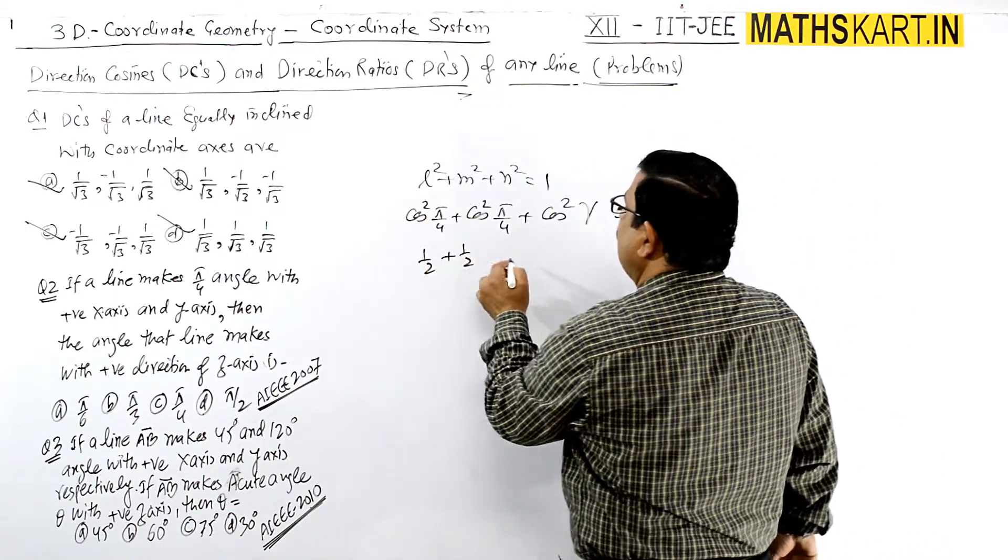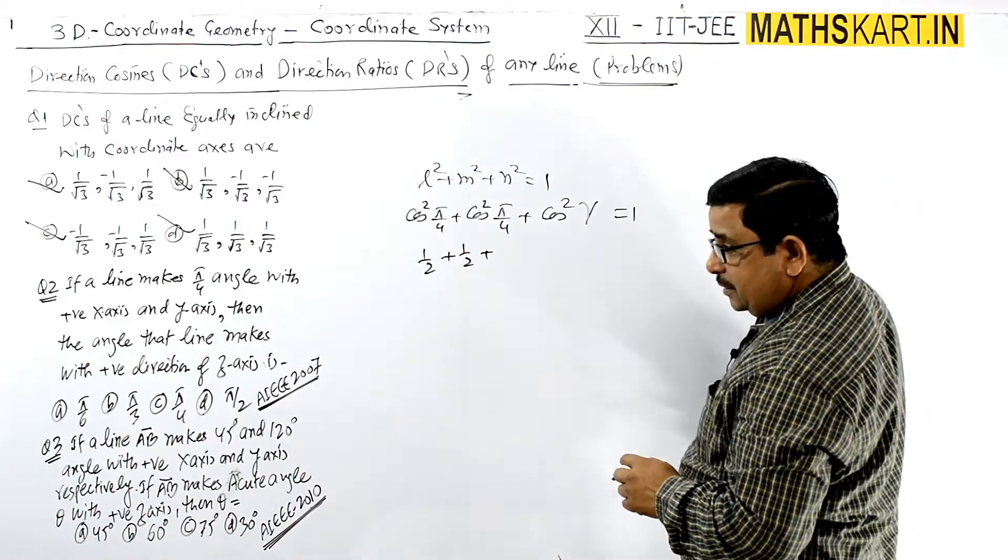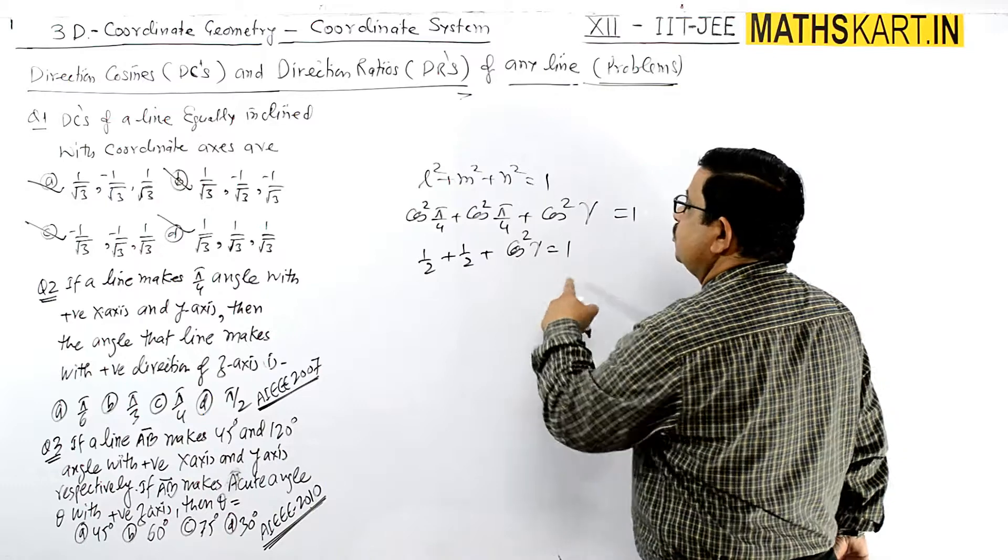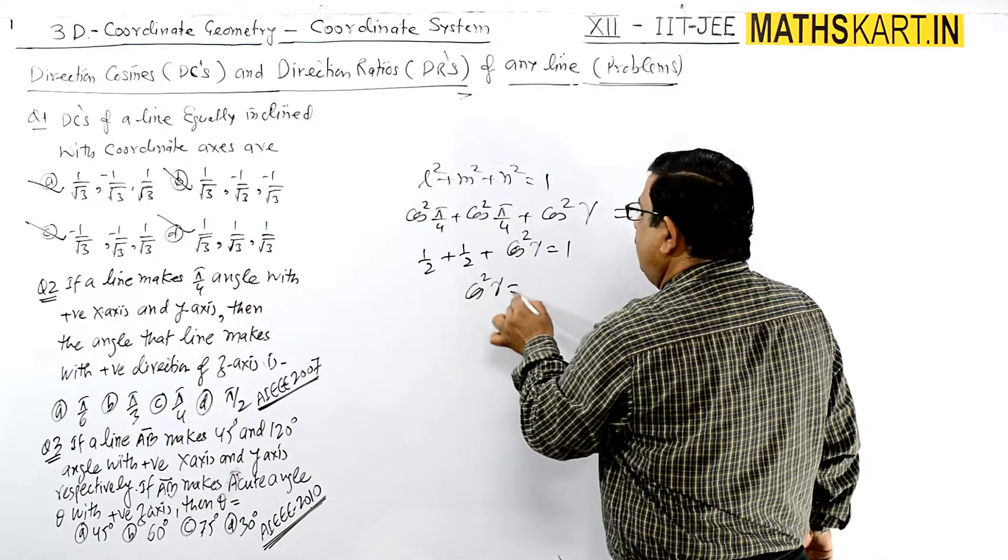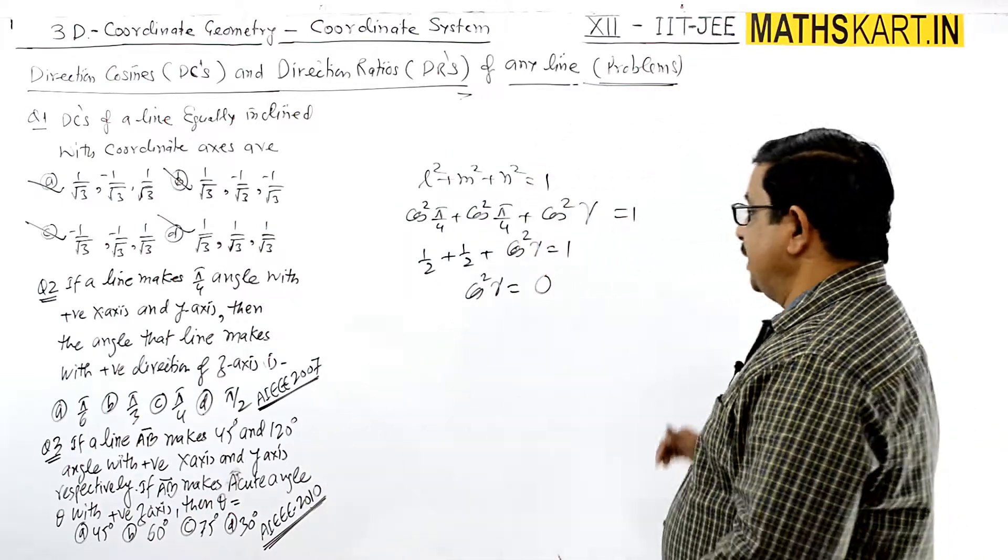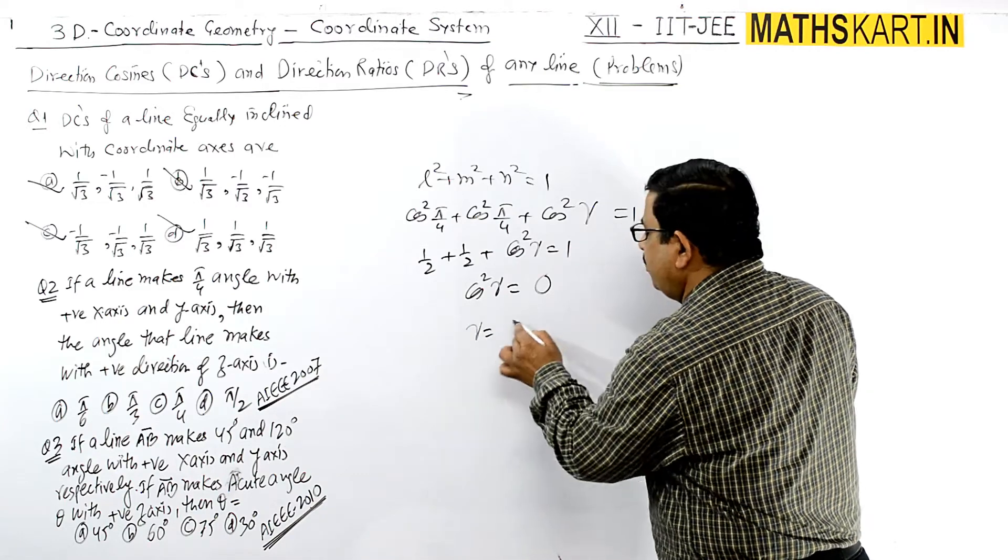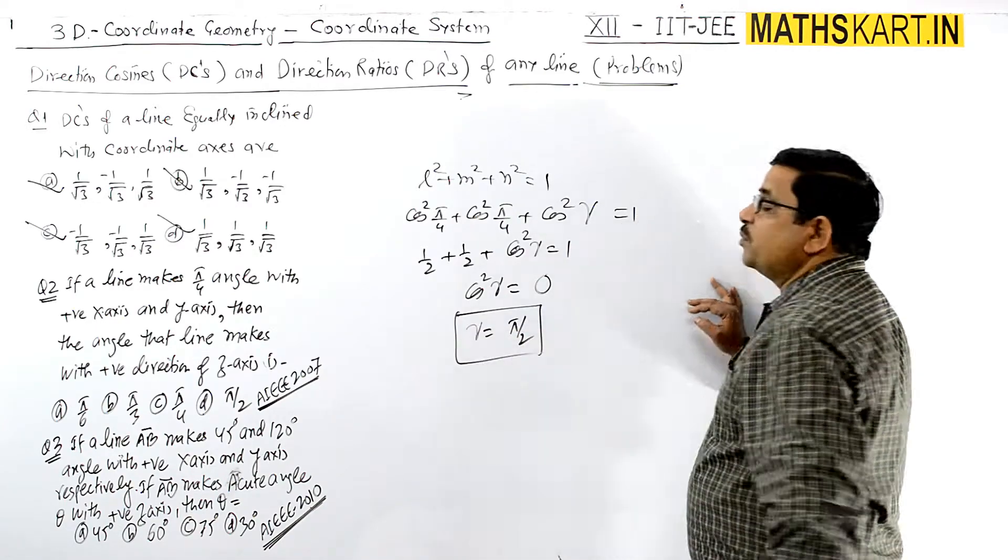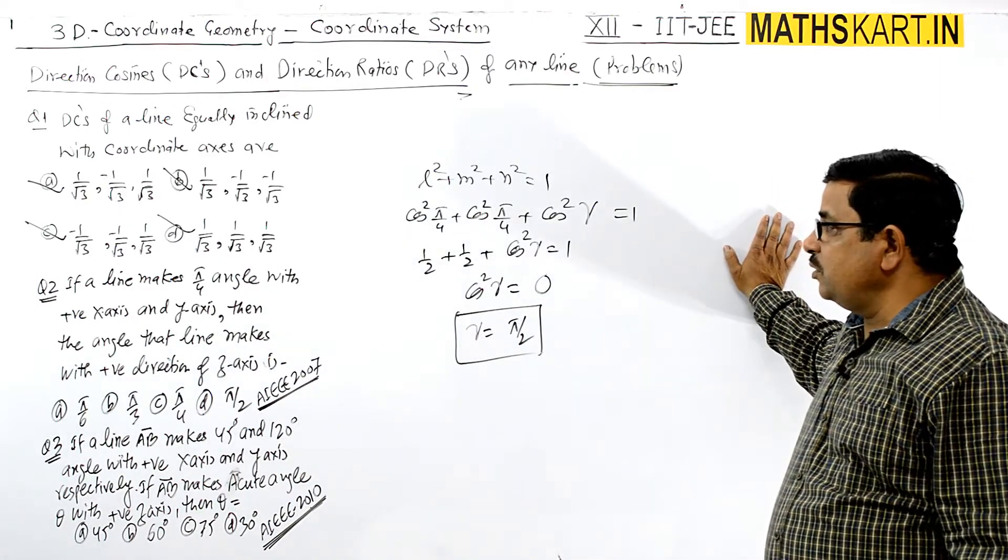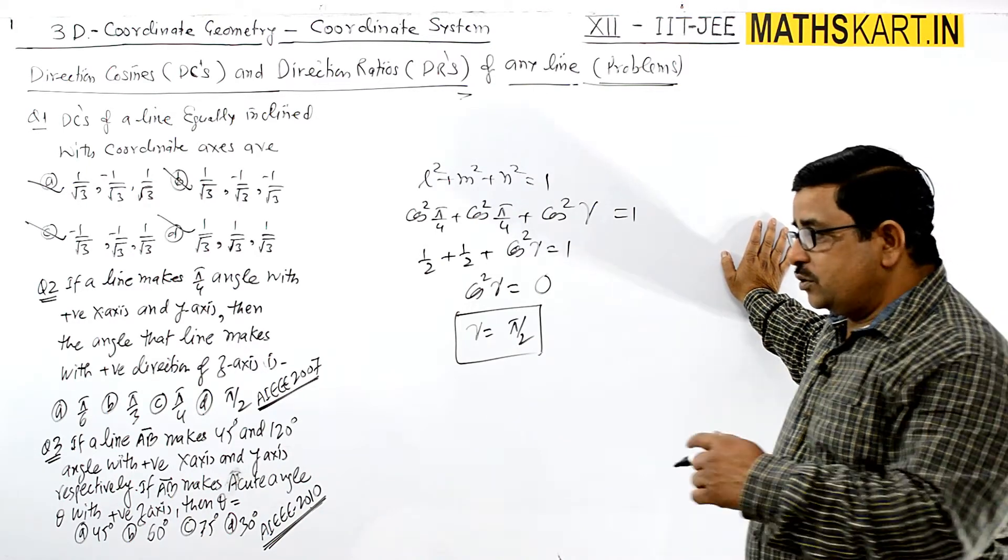cos(π/4) = 1/√2, so 1/2 + 1/2 + cos²γ = 1. Therefore cos²γ = 0, which means cos γ = 0. When cos = 0, that's cos 90°. So γ = 90° or π/2. This is the possible angle. The D option is correct.